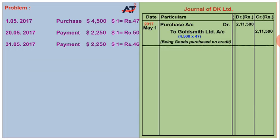On 20th May, the first payment of $2,250 (50%) is made. As per the personal account rule, Goldsmith Limited Account is debited (receiver). However, when goods were purchased, the rate was ₹47 per dollar. Now at the time of payment, the rate is ₹50 per dollar — meaning there is a loss of ₹3 per dollar.